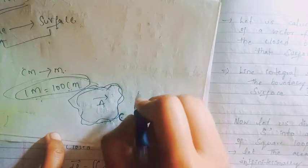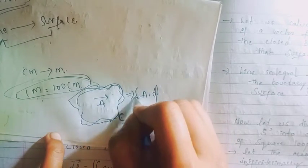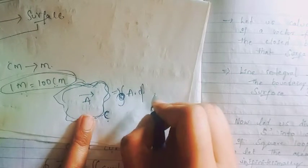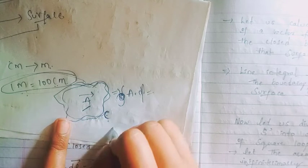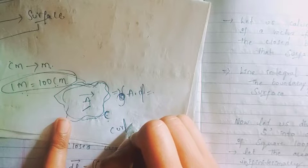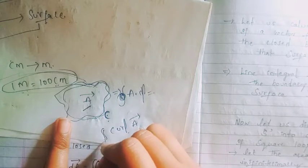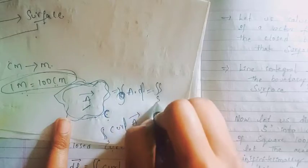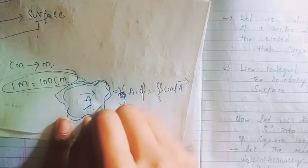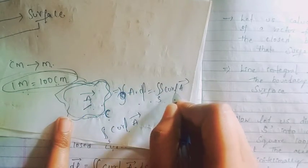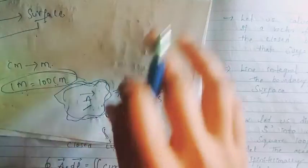Now we have a line integral along the closed curve. If we apply Stokes Theorem, with the vector being A, the line integral along the closed curve is equal to the surface integral of curl of A.